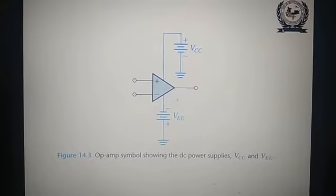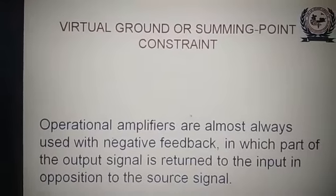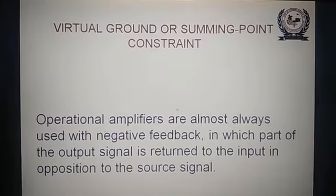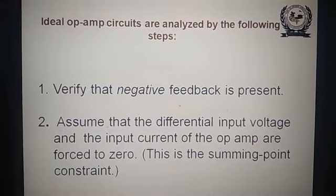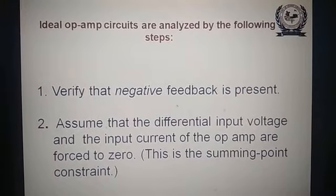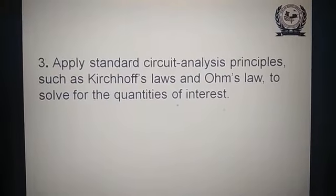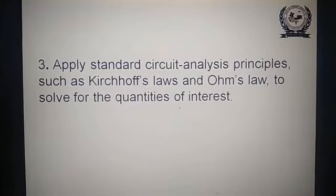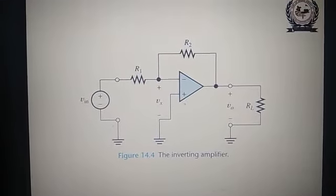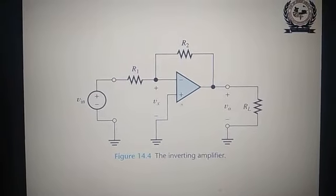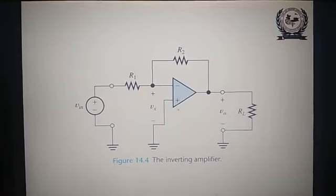We have seen the connection for the dual power supply plus VCC and minus VEE. We have also seen the virtual ground concept of the operational amplifier. We have seen negative feedback — feedback resistance RF is connected to the inverting terminal and the input resistance from the inverting terminal is grounded, which provides negative feedback. This is the inverting amplifier where the input is applied to the inverting terminal, the non-inverting terminal is grounded, R2 is the feedback resistance, R1 is the input resistance, and RL is the load resistance.